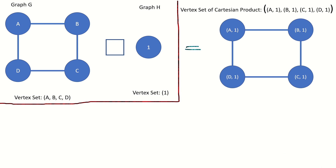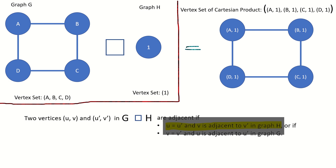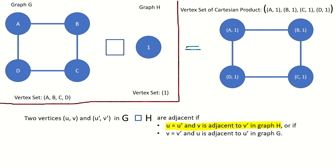We're done! That's the Cartesian product graph. Notice that it is just a copy of graph G. The first adjacency rule creates adjacencies based upon adjacencies in graph H, and the second adjacency rule creates adjacencies according to adjacencies in graph G. Since we only had a single vertex in graph H, there were no adjacencies to account for there, so we only needed to use the second adjacency rule.